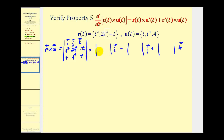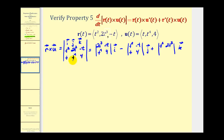The first two by two determinant will be formed by eliminating row one and column one, so we'll have two t cubed, negative t, t to the fourth, and four. The second determinant is formed by eliminating row one and column two, so we'll have t squared, negative t, t, and four. The last two by two determinant will be formed by eliminating row one and column three, so we'll have t squared, two t to the third, t, and t to the fourth.